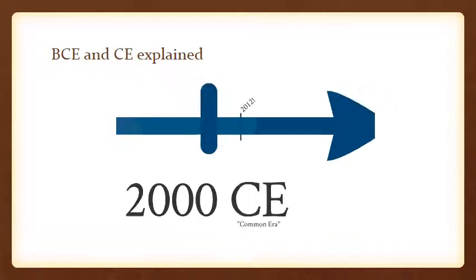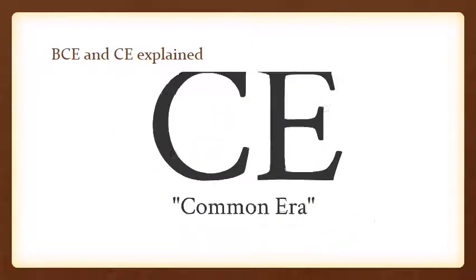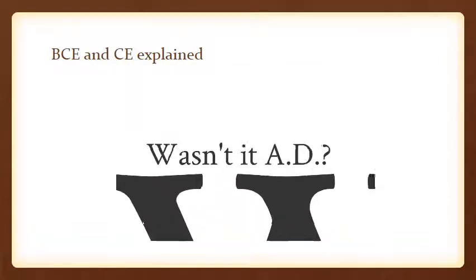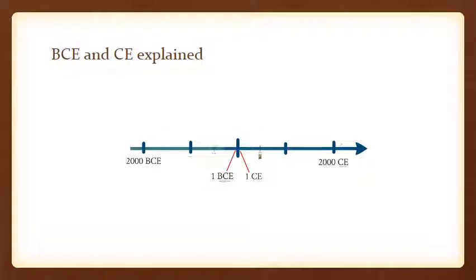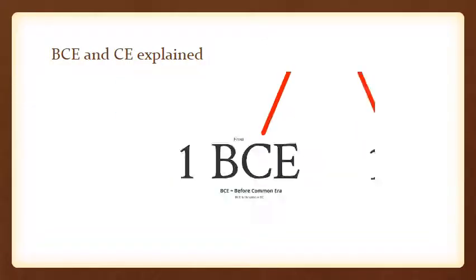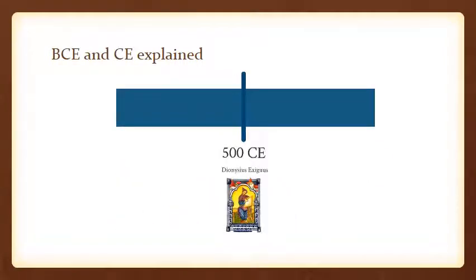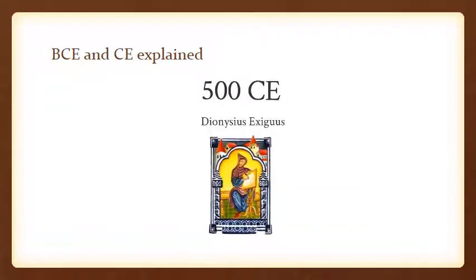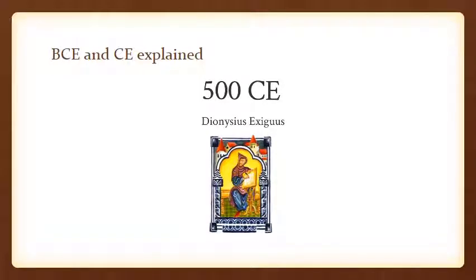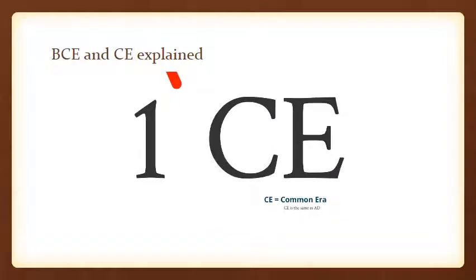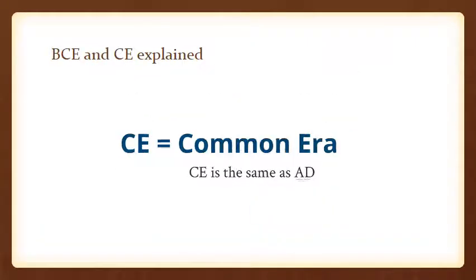You'll notice that 2012 is at the CE end — 2012 CE. But wasn't it 2012 AD? You're right, it was 2012 AD, but we are moving from AD to CE and from BC to BCE. To understand why, we need to look back to around 500 CE and a monk named Dionysius Exegus, who helped invent Anno Domini and BC. In the 6th century, he decided to help set the calendar and came up with AD, which is the same as CE.